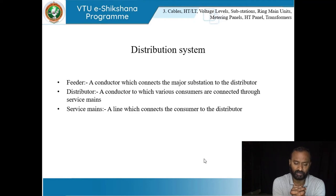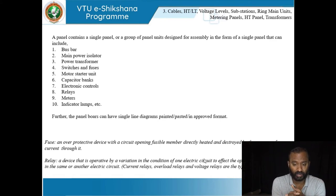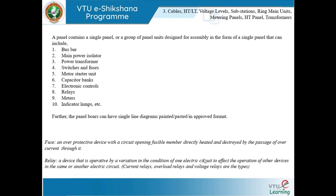To summarize the distribution system: a feeder is a conductor which connects a major substation to the distributor. A distributor is a conductor which connects the feeder output to the consumers. Service main is something which connects the consumer to the distributor. A panel contains a single panel or group of panels and usually includes busbars, main power, isolated power transformers, switches and fuses, motor starter units, capacitor banks, electronic controls, relays, meters, and indicator lamps.